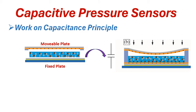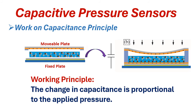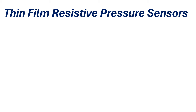As the distance between the plates is reduced, the capacitance increases. The change in capacitance is proportional to the applied pressure. This is the basic working principle of capacitive pressure sensors. Third is the thin film resistive pressure transmitter.